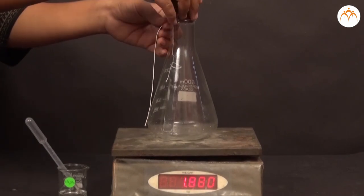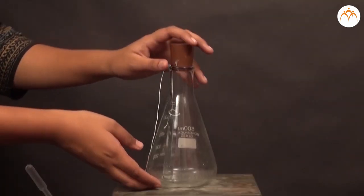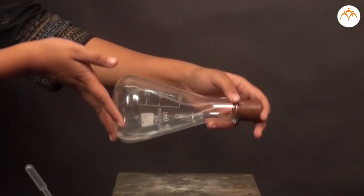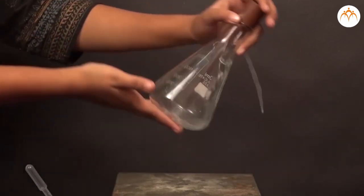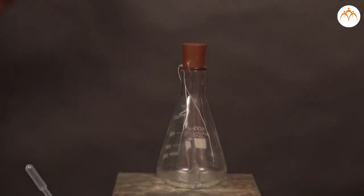We weigh this assembly together on a balance. We tilt the flask and mix the solutions in the conical flask and test tube. Now we weigh the assembly again.